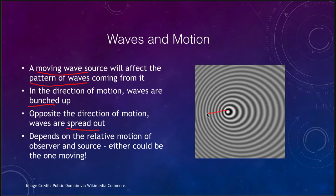Here we have an object which must be moving in this direction because the waves are getting bunched up on this side, pushed closer and closer together, shortening their wavelength, while on the other side they're getting stretched out to longer wavelengths. So depending on the motion, the wavelengths are actually changing. This depends on relative motion — it does not matter whether it is the observer or the source doing the moving.